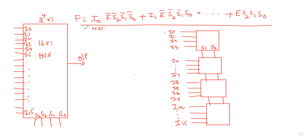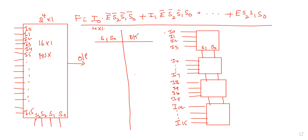The selection lines S0 and S1 are shown in the table. You can connect the outputs using the selection line combinations 0-0. If you want to use S0 and S1 together, you can connect them with four multiplexers using 4 by 1 MUXes.